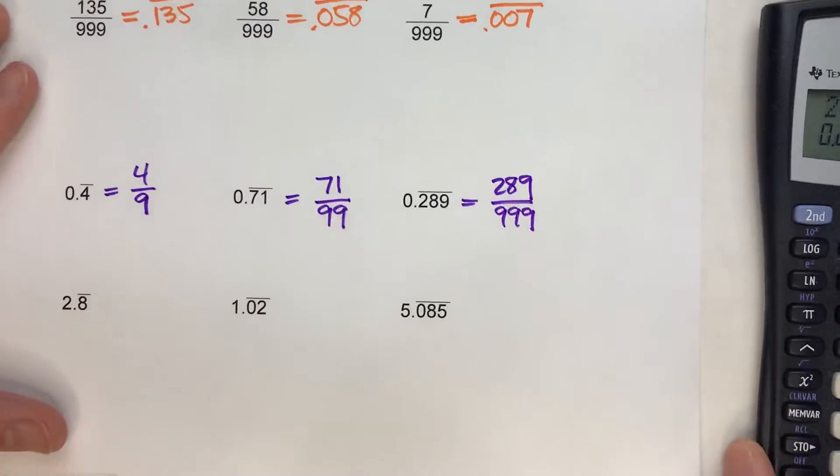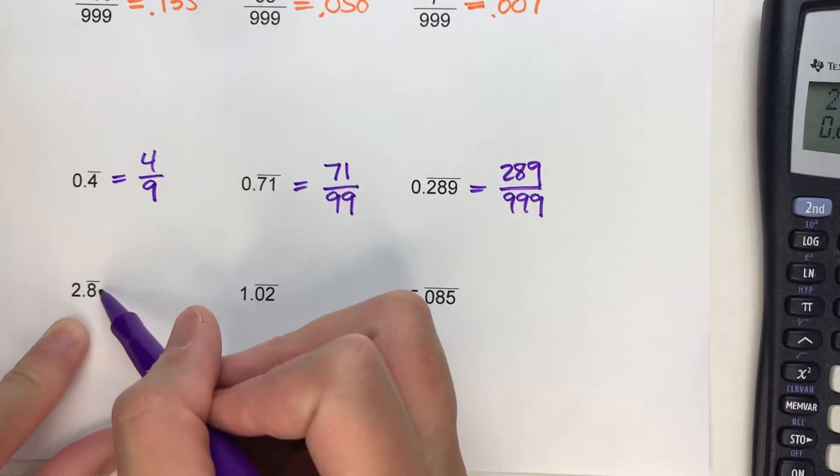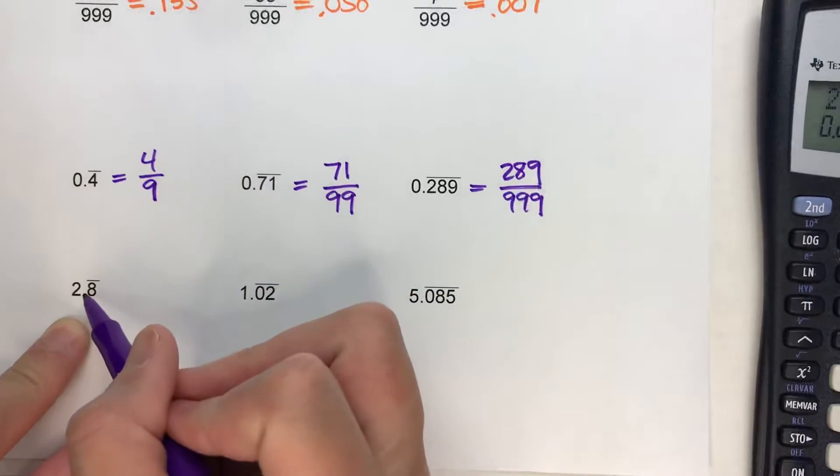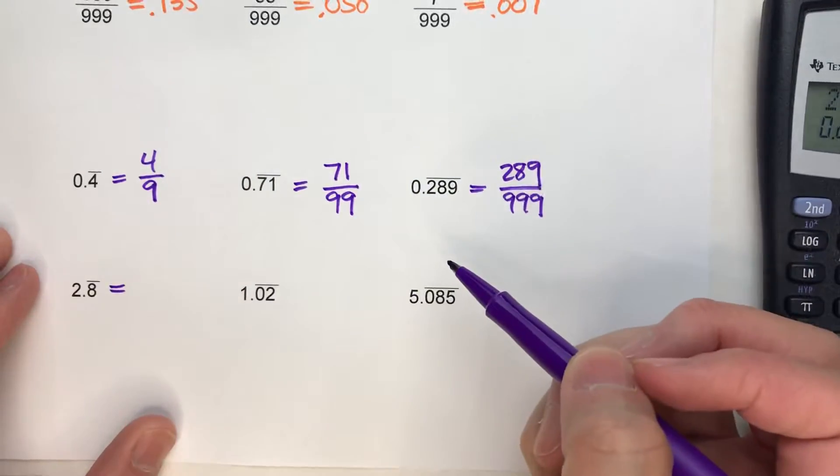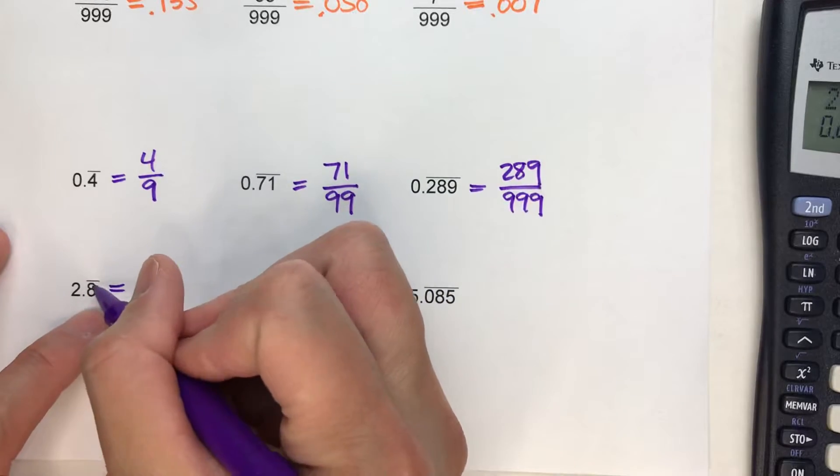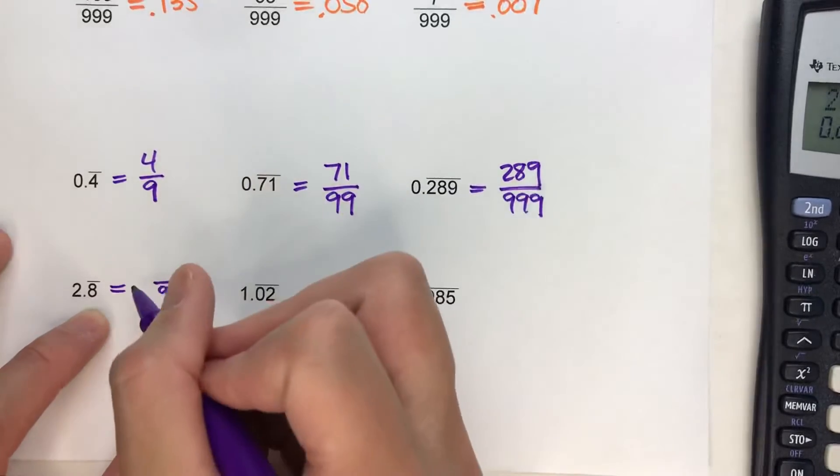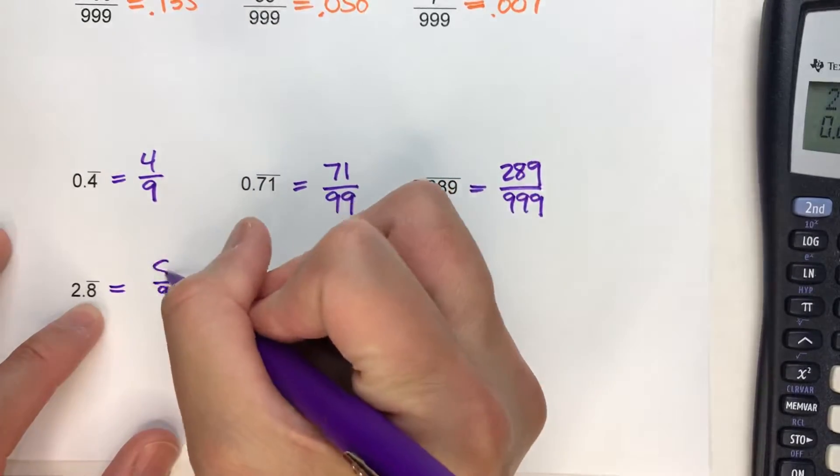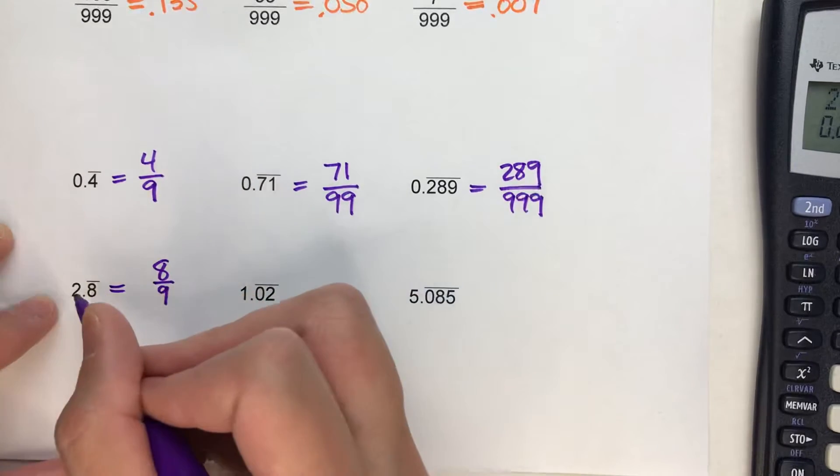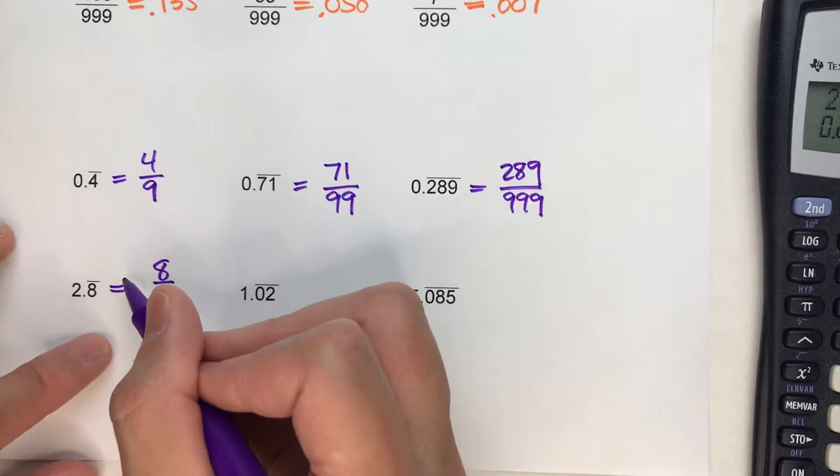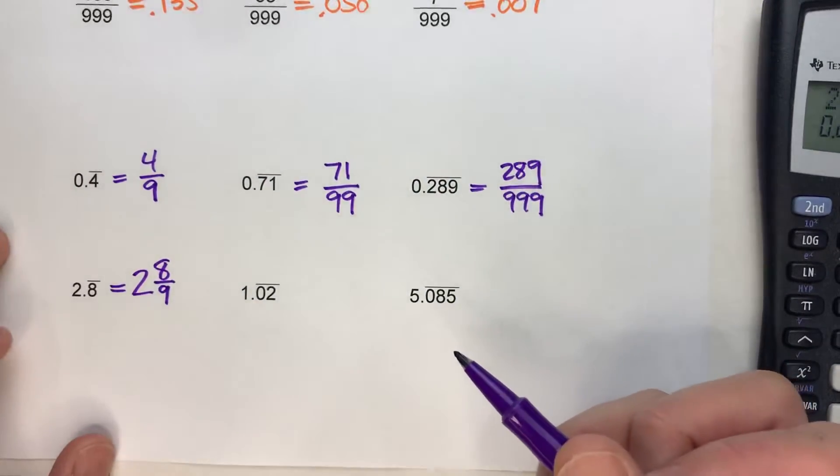Now we can also apply this to slightly harder ones. Because look at here. We've got 2.8 repeating with just the 8's repeating. The 2 is a whole number. Now the funny thing about this is, it's not that much harder than these. Because 0.8 repeating, we know there's one digit repeating, so it's ninths. The numerator has to be the repeating digit, which is 8. So 8/9, that's the 0.8 repeating. But this is 2.8 repeating. So that's 2 whole and 8 repeating. So this would be 2 and 8/9. There you go.